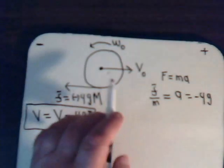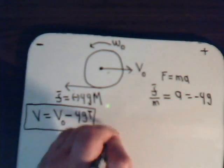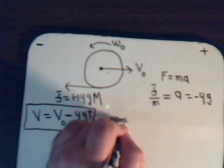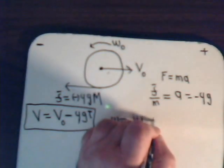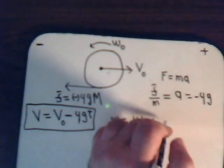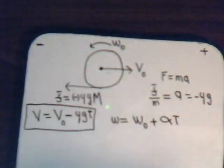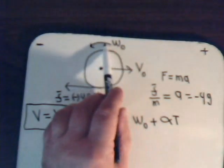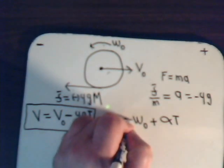Now, what about the angular velocity? That has a similar equation: omega equals initial angular velocity plus angular acceleration multiplied by time. For our problem, omega-naught is going in the opposite sense, so it has a minus sign.